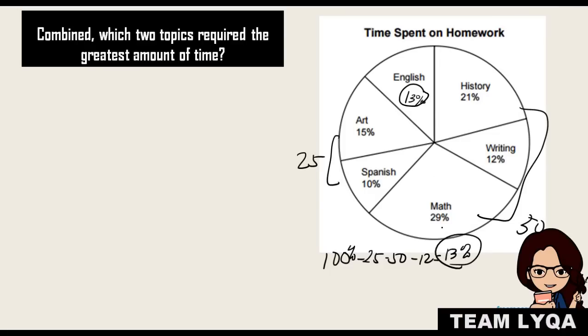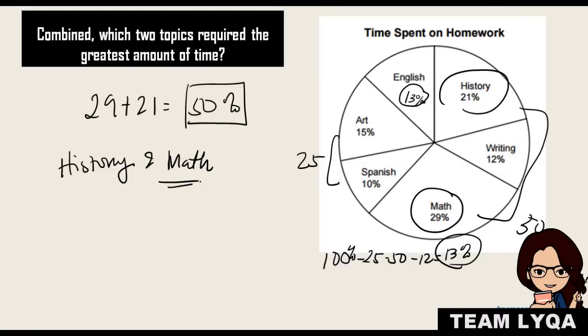So since it's 13%, let's look now at which two topics have the greatest amount of time. Obviously, math has the biggest size, the biggest chunk in our pie. So you have math. And the second is history because it's 29 and 21%. And since we already calculated it to find out English, 29 plus 21 is equal to 50%. So those are the two topics required to make up the greatest amount of time. So the answer would be history and math. When you combine them, it's greater than any other two topics combined.